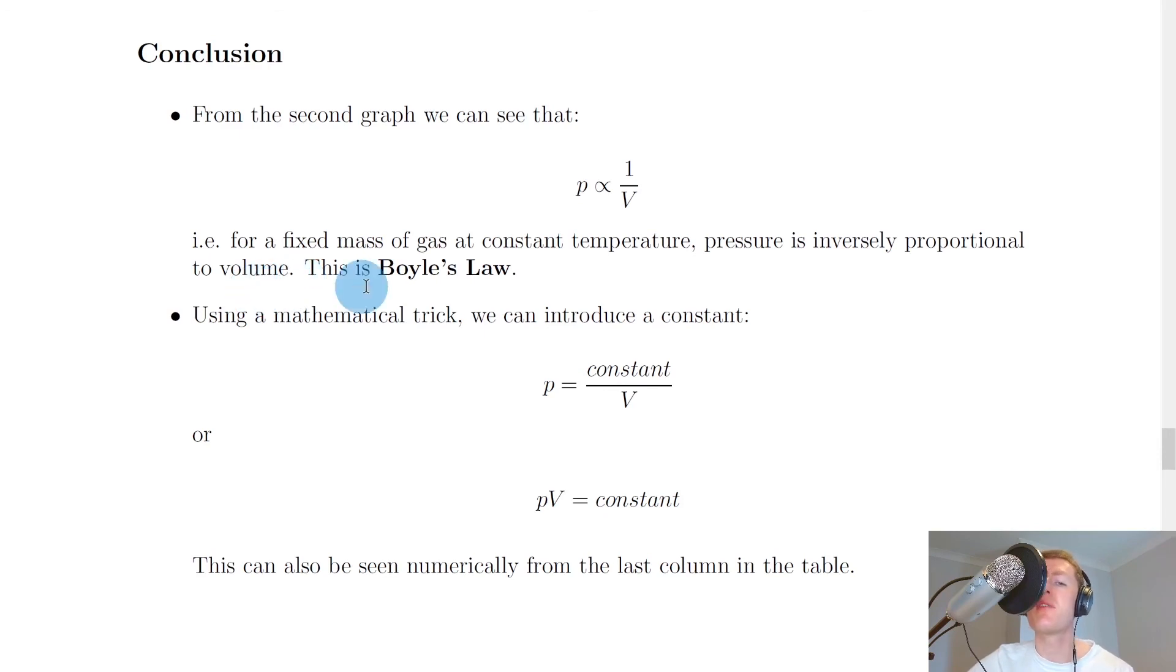We could then conclude that for a fixed mass of gas at constant temperature, pressure is inversely proportional to volume. This is Boyle's law. What this means is that as volume increases, pressure decreases, or as volume decreases, pressure increases. That's for a fixed mass of gas where we keep the temperature the same. That's us answer the aim of the experiment, which was to find the relationship between pressure and volume for a fixed mass of gas at constant temperature. We've found that the relationship is an inverse one.